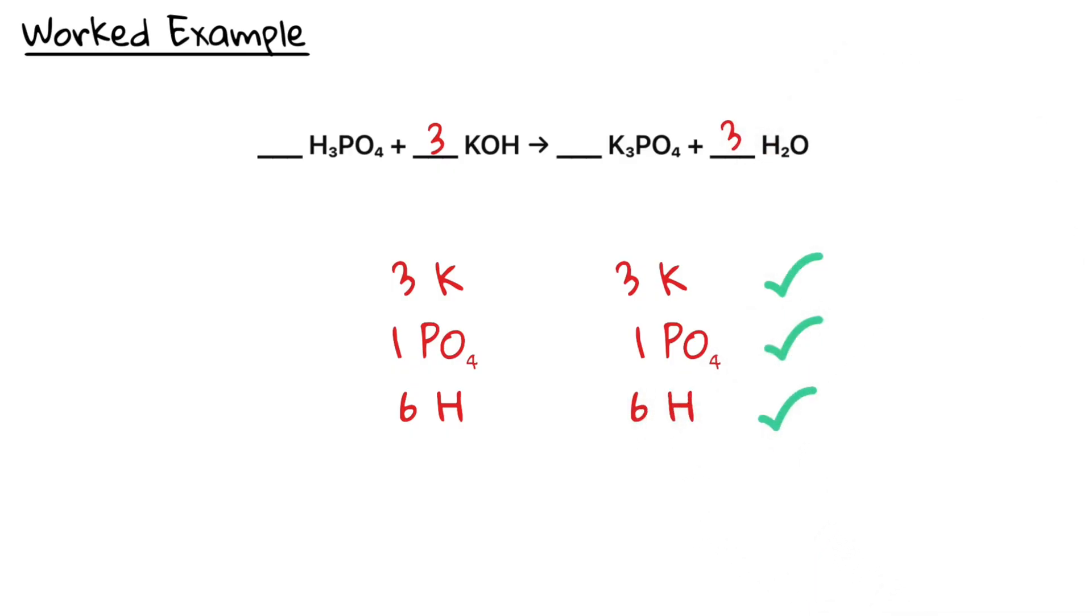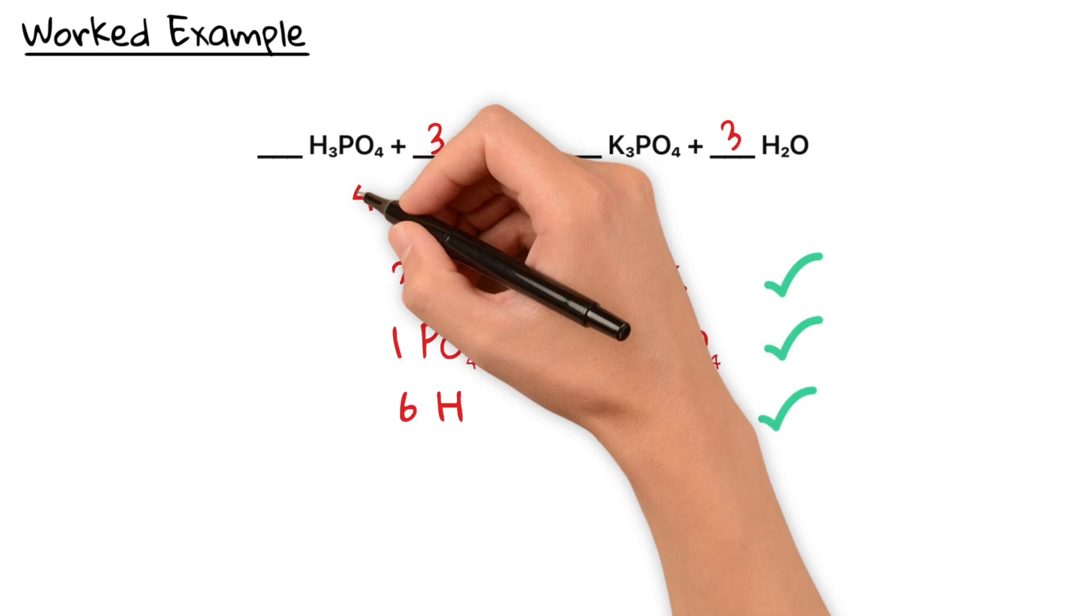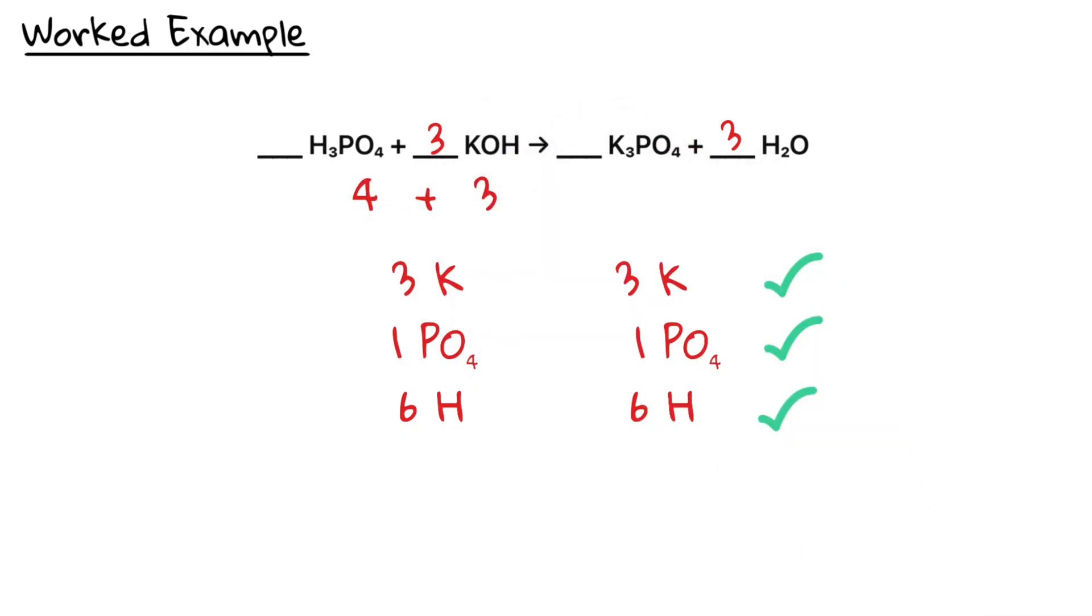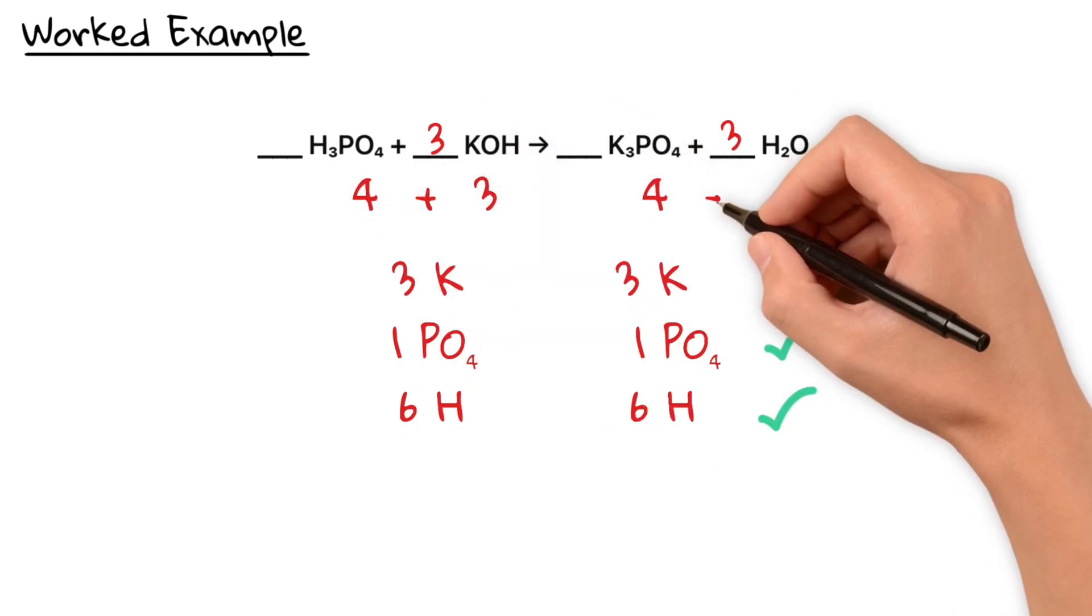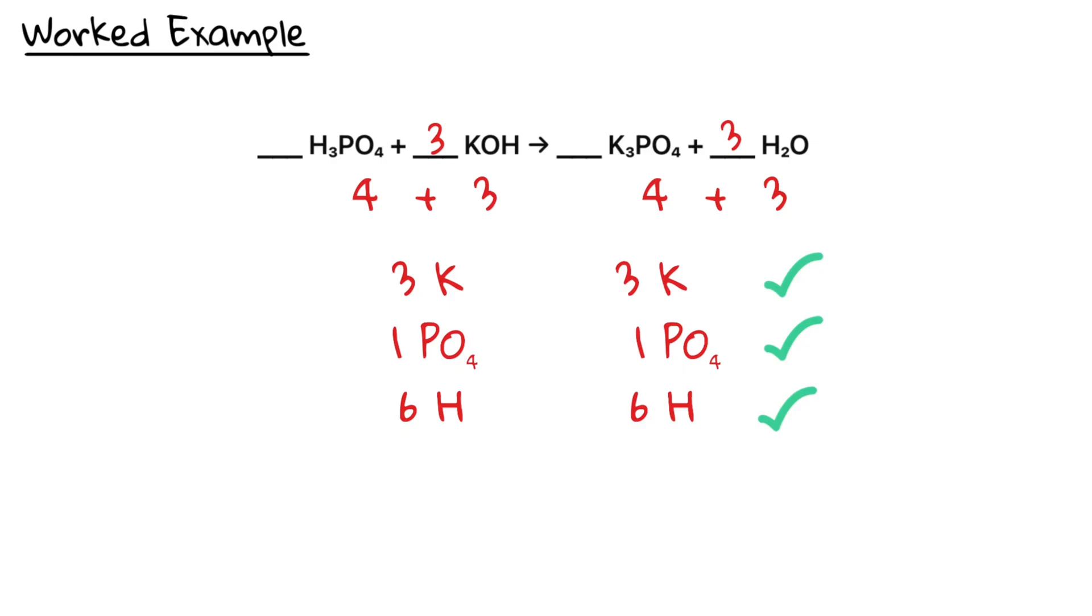To double check if we did everything correctly, we can now count the oxygens on both sides. We see that on the left hand side, we have four plus three equals seven oxygen. And on the right hand side, we also have four plus three equals seven oxygens. And that's the proof that it's balanced correctly.